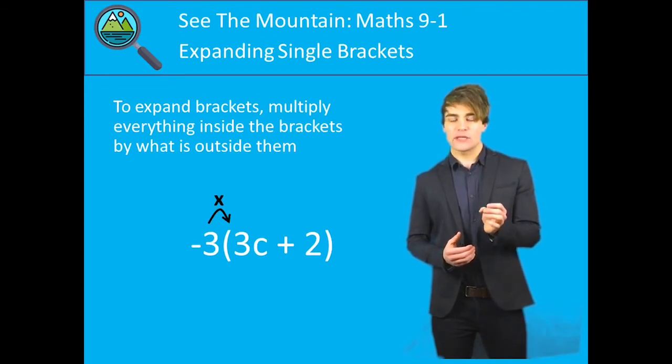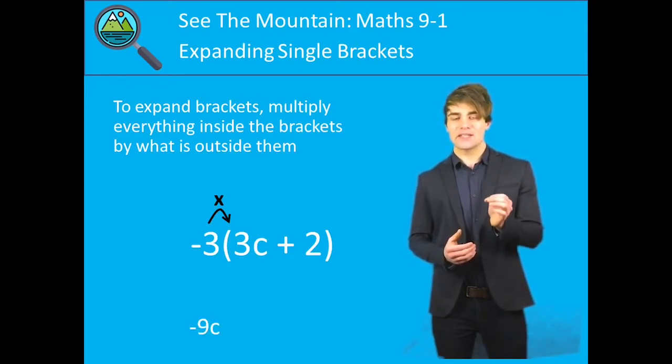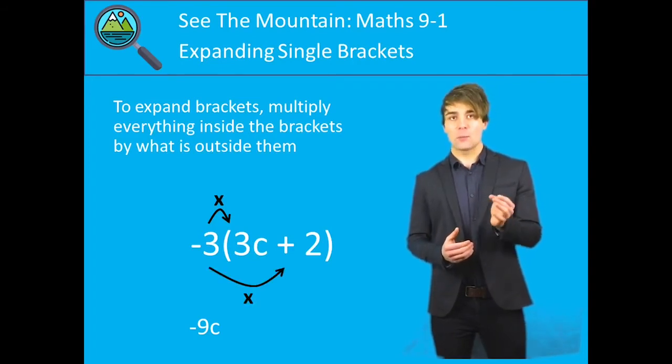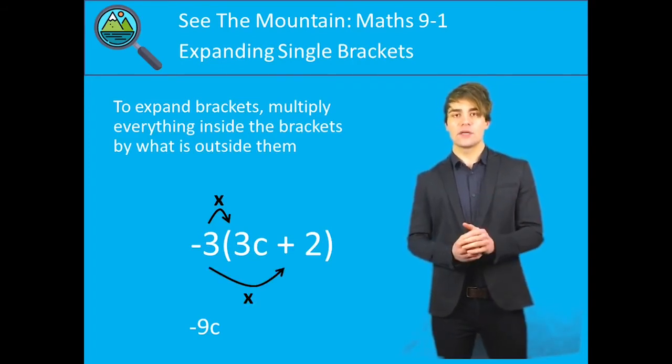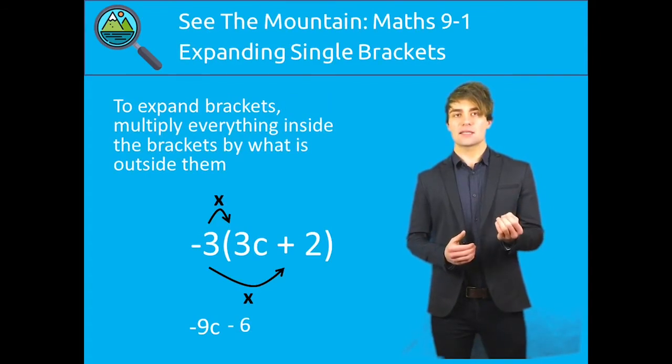-3 multiplied by 3c gives us -9c. Now lastly, -3 multiplied by positive 2 gives us -6. For our final answer now of -9c-6.